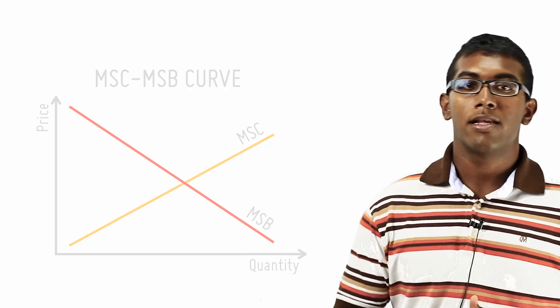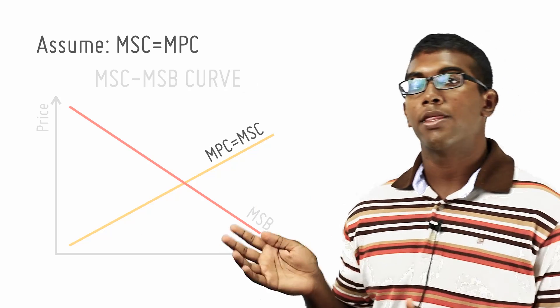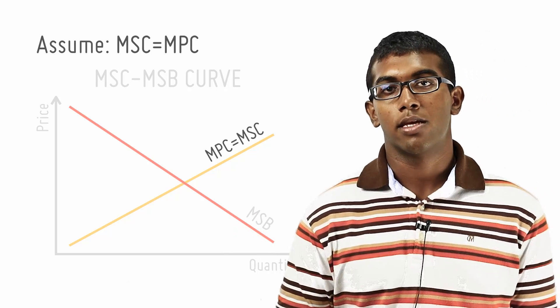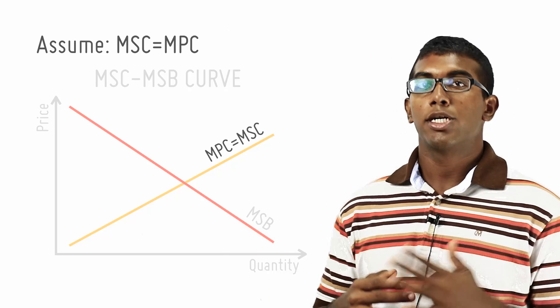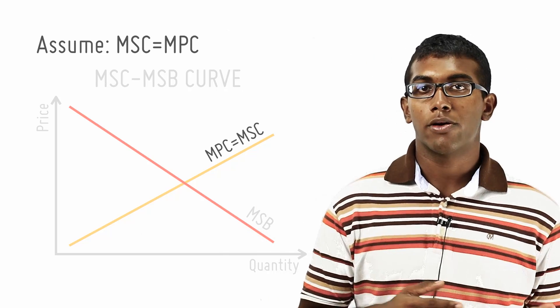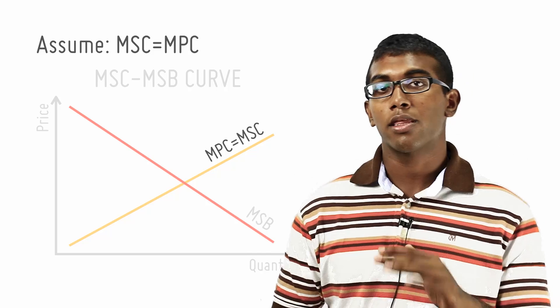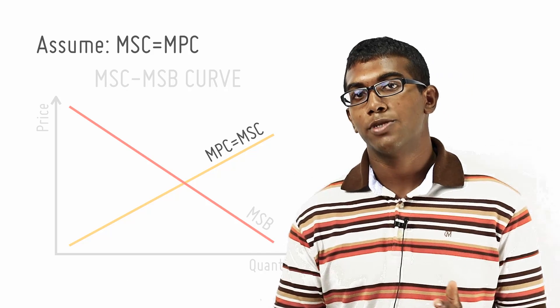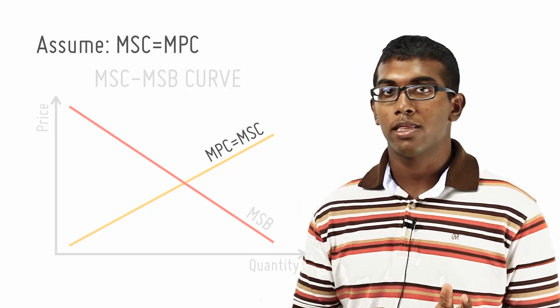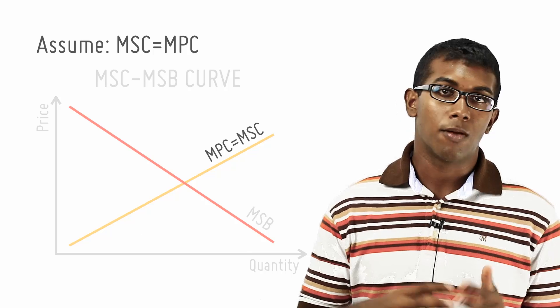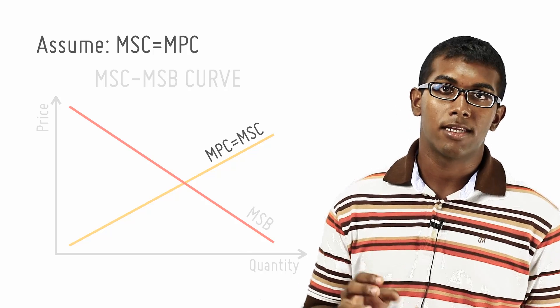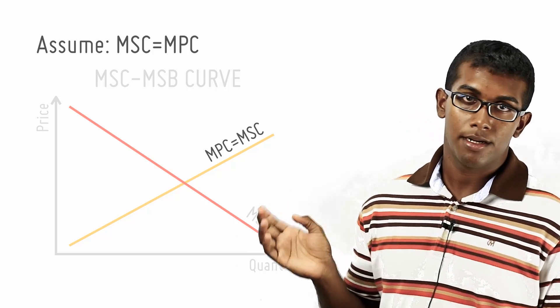Now, let's make a few assumptions. Let's assume that MPC equals MSC — marginal private cost equals to the marginal social cost. This is a necessary assumption in order to really see the effects of positive externalities in this market.